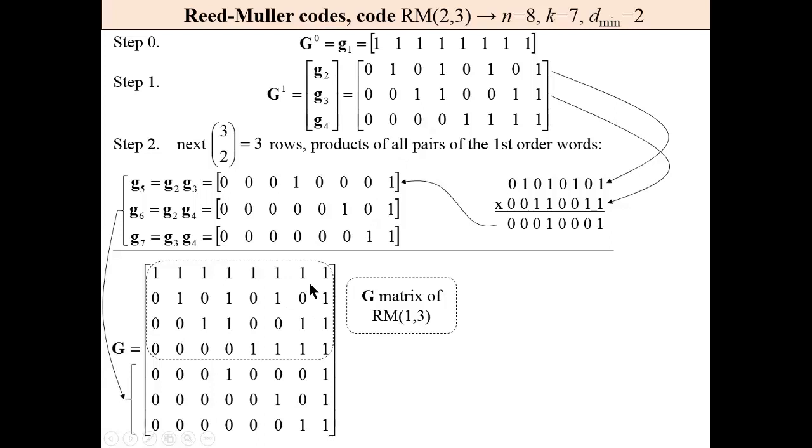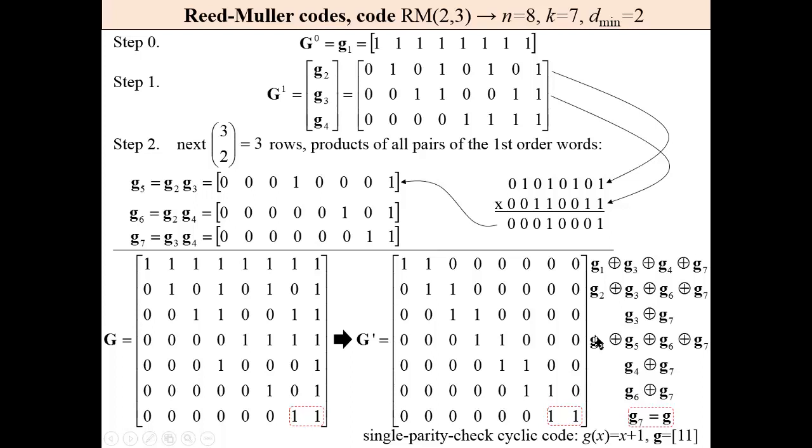This matrix G, by modulo 2 additions of rows, can be converted to a matrix of this kind. As can be seen, it is a cyclic code.